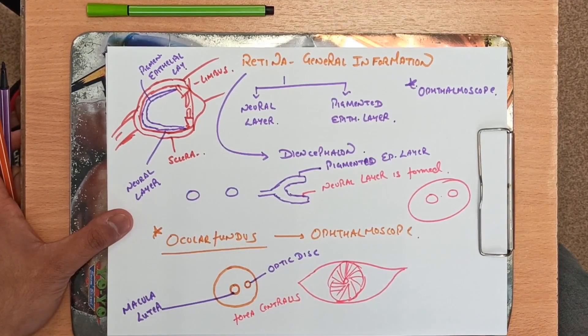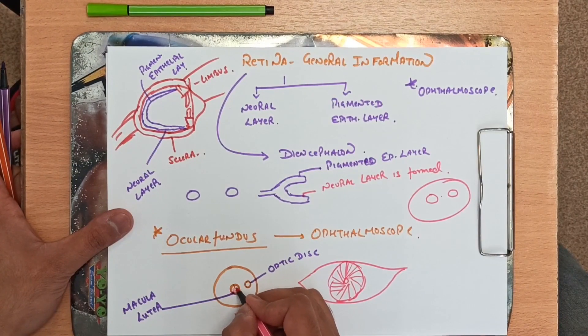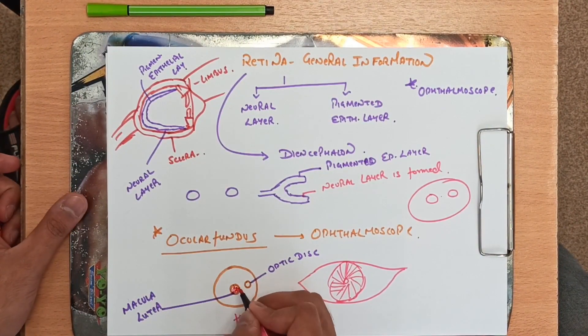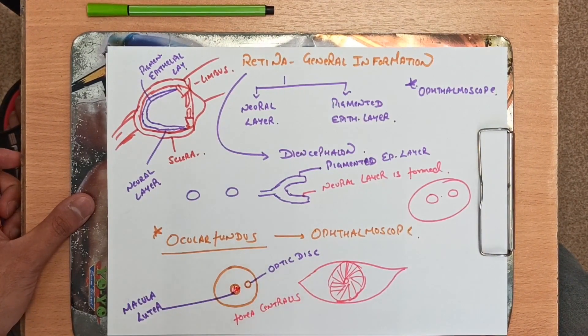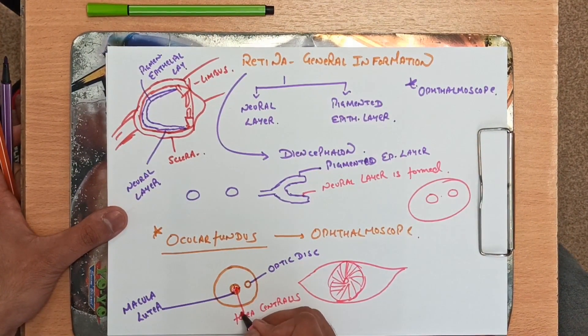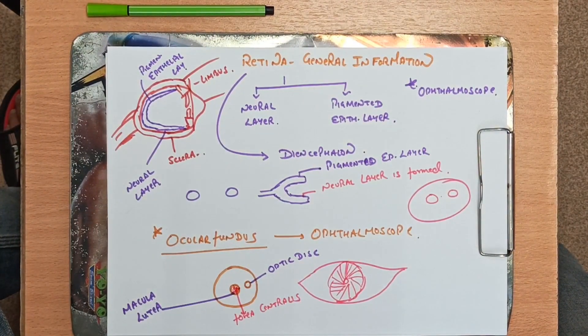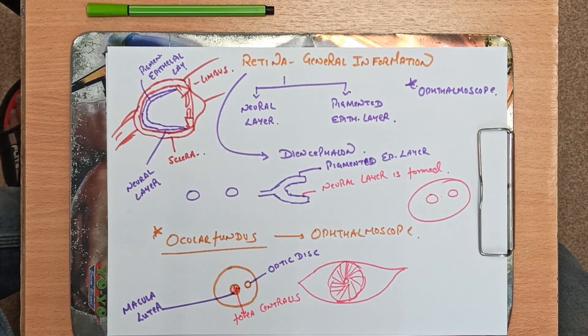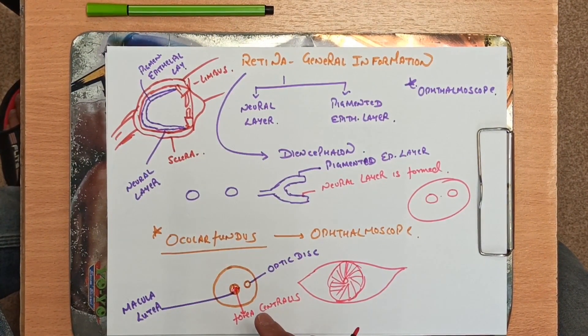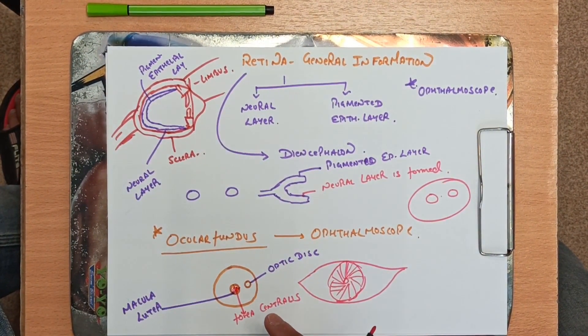Inside the macula lutea there are large amounts of cells. Later on I will be telling you what are these - these are either rod cells or cone cells. This part is called the fovea centralis. So up to this part I have told you what is an optic disc, what is macula lutea, and what is fovea centralis.